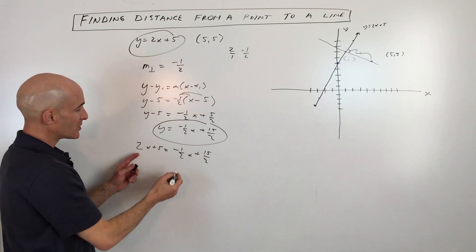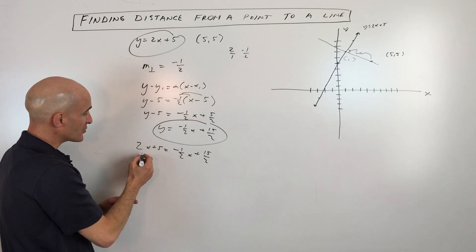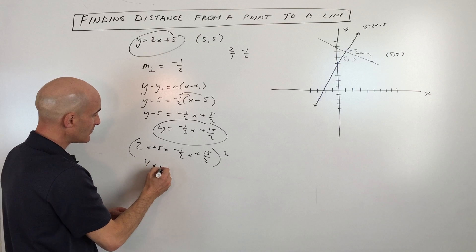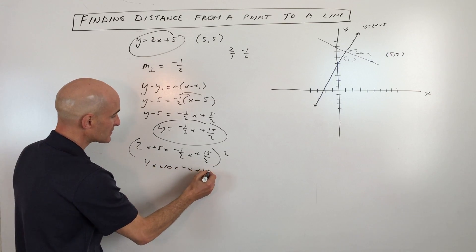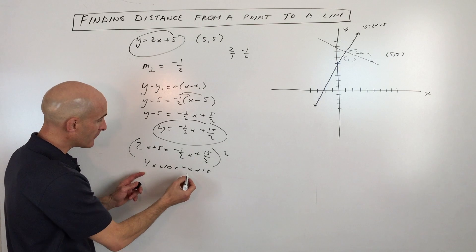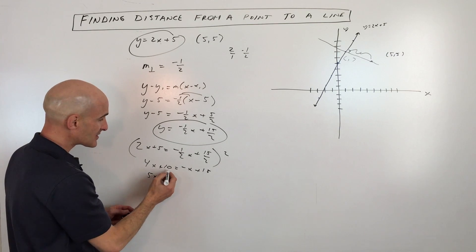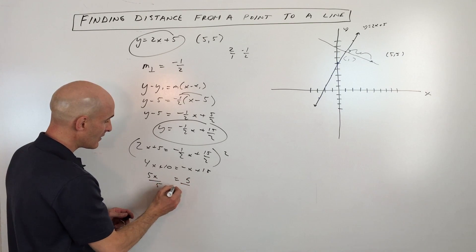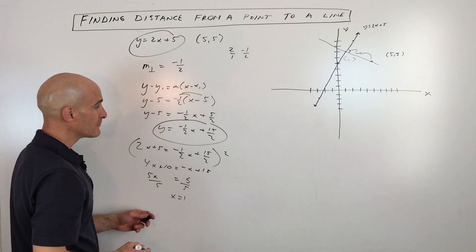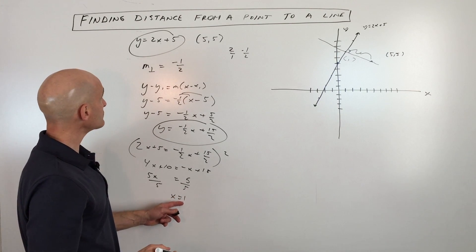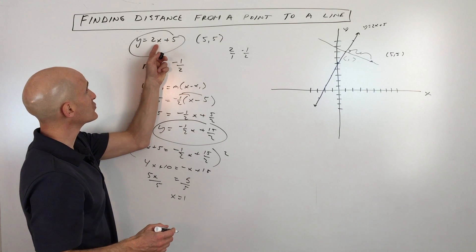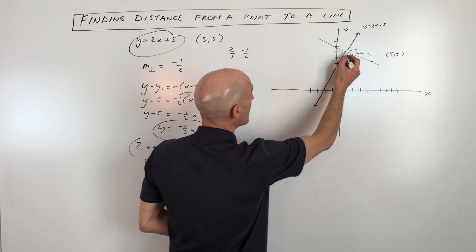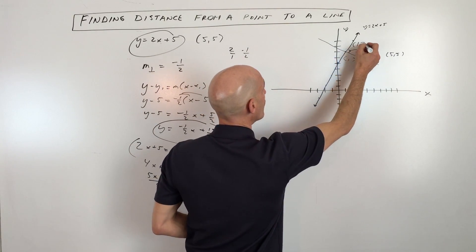And then what we're going to do is multiply through by 2 just to clear the denominator. So if I multiply everything in this equation times 2, we get 4x plus 10 equals negative x plus 15. Now that'll make it a little bit easier to solve. So if I add x to both sides, that's going to be 5x. If I subtract 10 from both sides, that's going to be 5. And if I divide by 5, you can see that x equals 1. Now if I put 1 back in to either equation, I'll just put it into this equation here. 2 times 1 is 2 plus 5 is 7. So you can see that these points are going to cross here at (1,7).